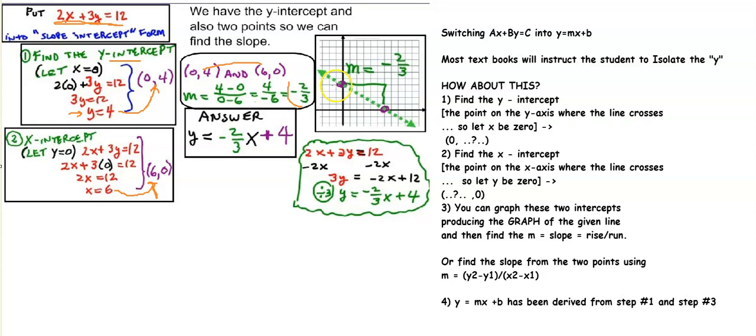We can also go over here to the graph, because we plotted the y-intercept, we plotted the x-intercept. We can see this is a negative slope, so we can do the rise over run method. Either way we do it, we get a slope of negative 2 thirds.